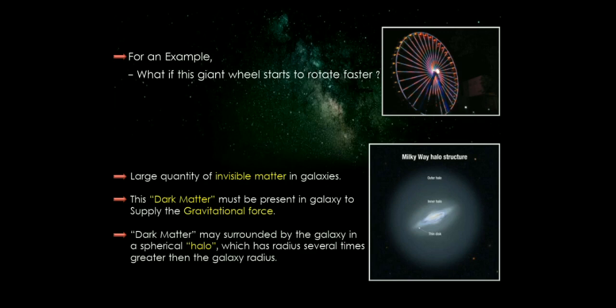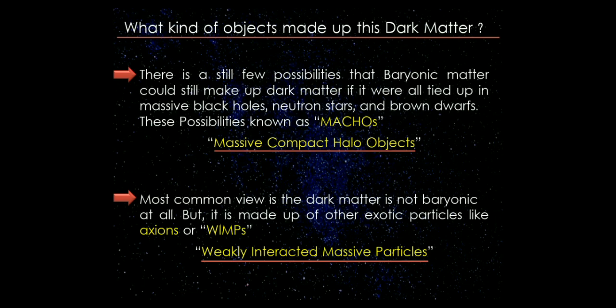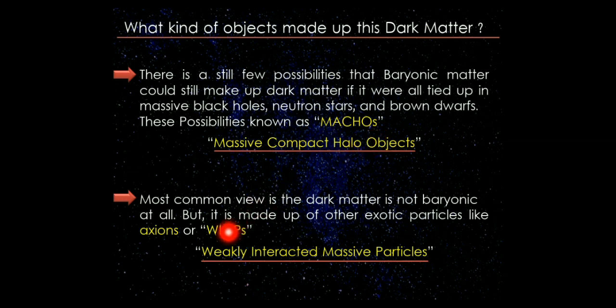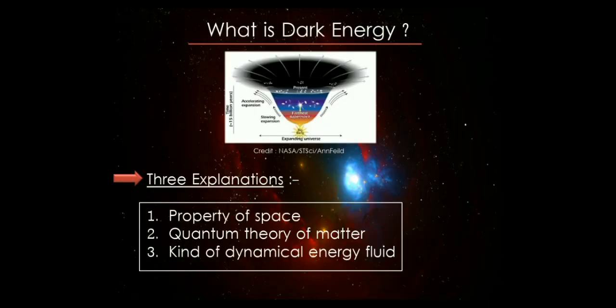The question is: what kind of objects make up dark matter? There are two types. First are MACHOs — Massive Compact Halo Objects — such as massive black holes, neutron stars, and brown dwarfs. Second are WIMPs — Weakly Interacting Massive Particles — like axions.